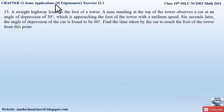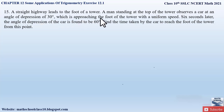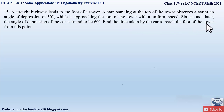Question number 15 from exercise 12.1, chapter 12: Some Applications of Trigonometry says: a straight highway leads to the foot of a tower. A man standing at the top of the tower observes a car at an angle of depression of 30 degrees, which is approaching the foot of the tower with a uniform speed. Six seconds later, the angle of depression of the car is found to be 60 degrees. Find the time taken by the car to reach the foot of the tower from this point.